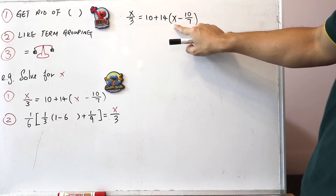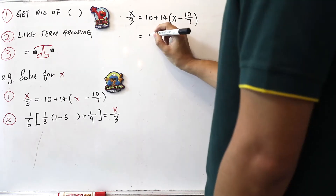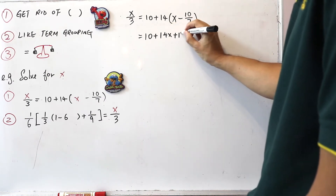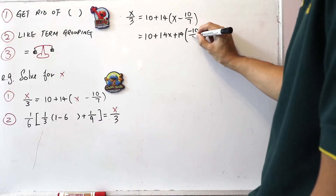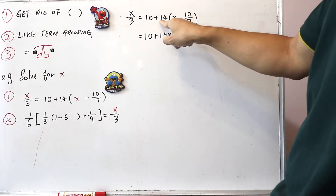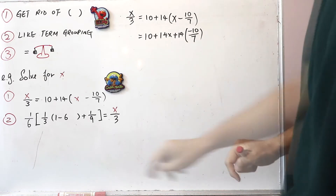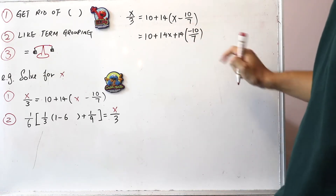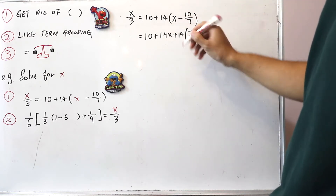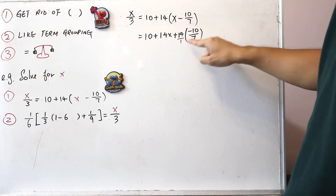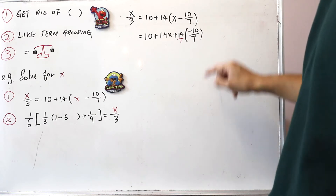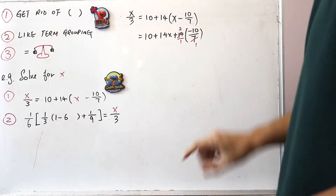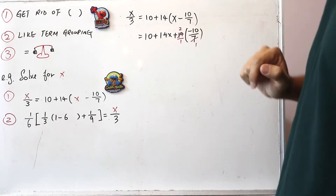The simplest thing is to multiply 14 into each term inside the round bracket — multiply 14 by x, and multiply 14 by minus 10 over 7. So it becomes 10 plus 14x, plus 14 multiplied by minus 10 over 7. You can simplify this: 14 divided by 1, and 7 divided by 7 is 1, 14 divided by 7 is 2 — so 2 times minus 10 gives minus 20.